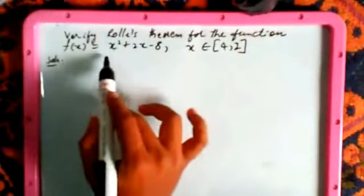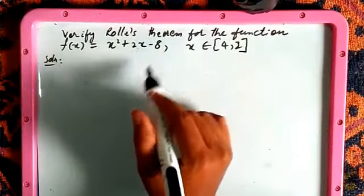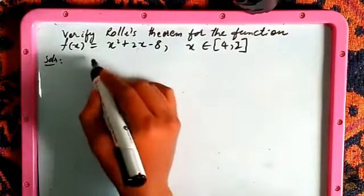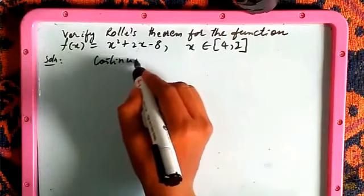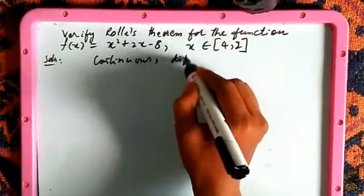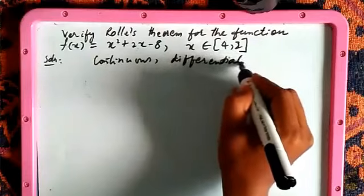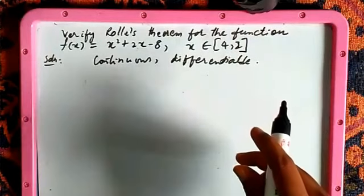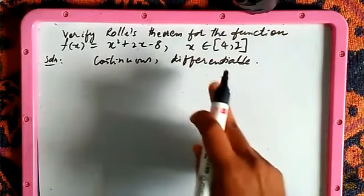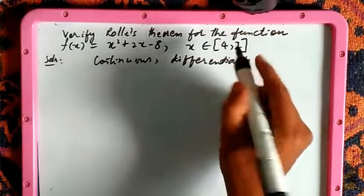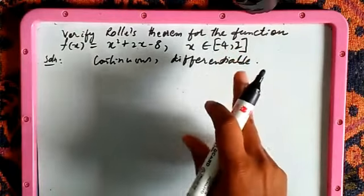First, you need to check whether it is a polynomial or not. You can see x² + 2x - 8 is a polynomial, so it is continuous and differentiable. These are the two conditions to check when verifying Rolle's theorem — whether it is continuous and differentiable on the interval [-4, 2].